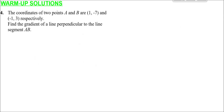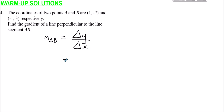Question 4: the coordinates of two points A and B are (1, -7) and (-1, 3) respectively. Find the gradient of a line perpendicular to line segment AB. First, work out the gradient of AB. The gradient of any line segment is the change in y divided by the change in x. So here, the y coordinate of B minus y coordinate of A is 3 minus (-7), and x coordinate of B minus x coordinate of A is -1 minus 1.